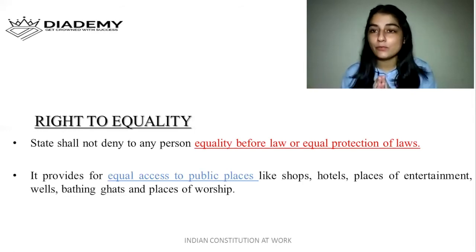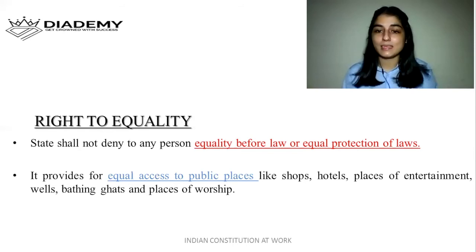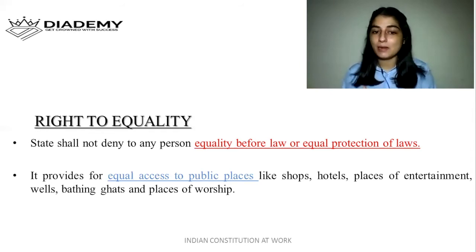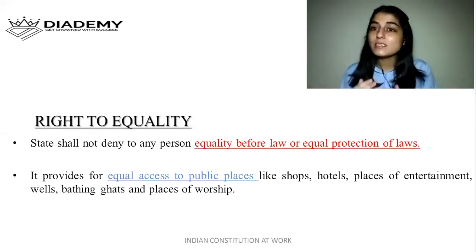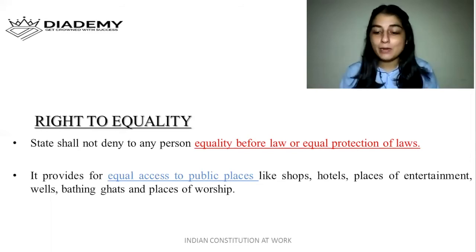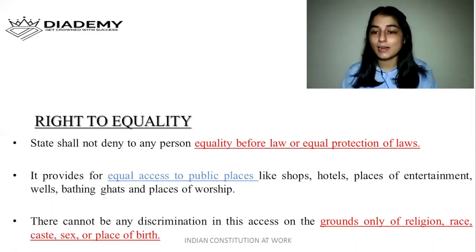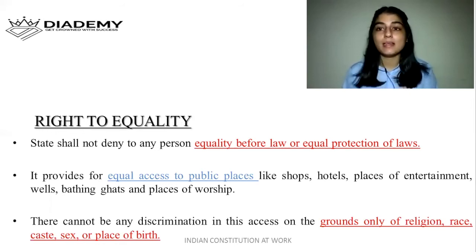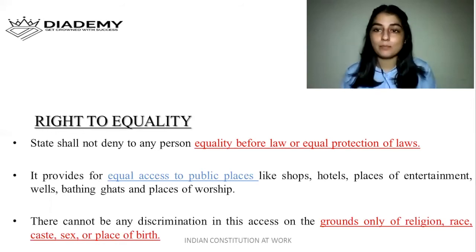Next is Article 15. Article 15 says that in public places such as shops, hotels, places of entertainment, wells, bathing ghats, and places of worship, anyone can go. There can be no discrimination on the grounds of religion, race, caste, sex, or place of birth. These public places can be visited by anybody and there shall be no discrimination.